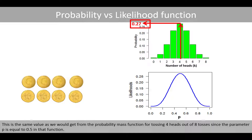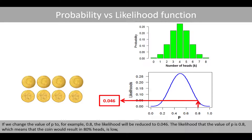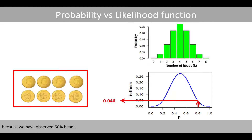This is the same value as we would get from the probability function for tossing four heads out of eight tosses, since the parameter p is equal to 0.5 in that function. If we change the value of p to, for example, 0.8, the likelihood will be reduced to 0.046. The likelihood that p is 0.8 — meaning the coin would result in 80% heads — is low, because we have observed 50% heads.